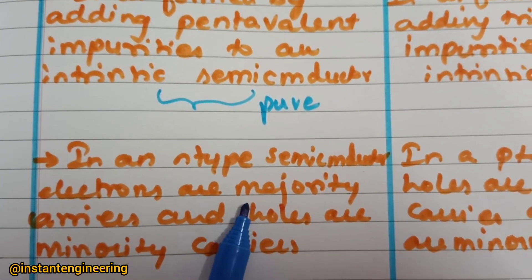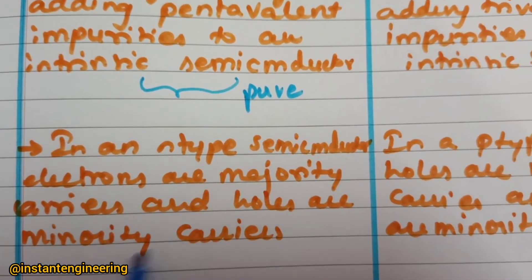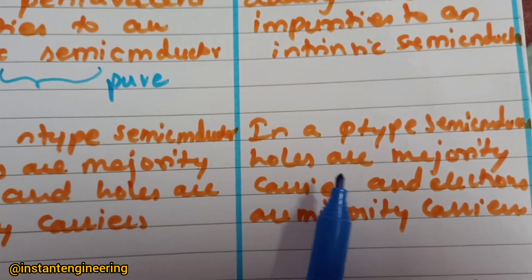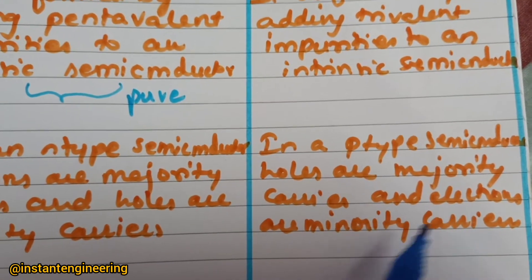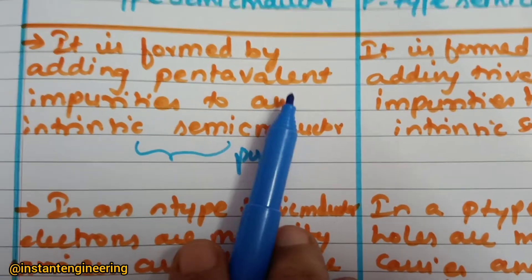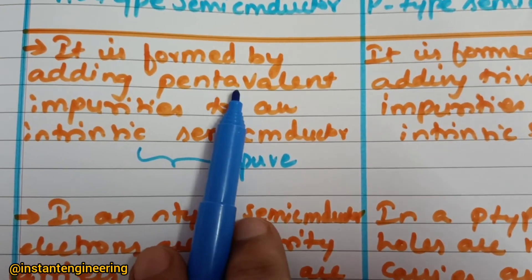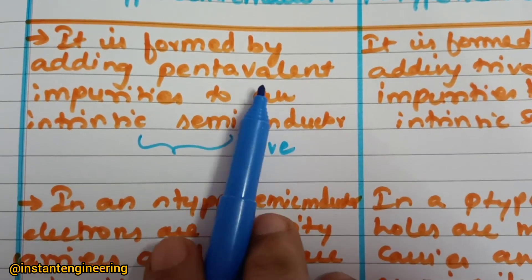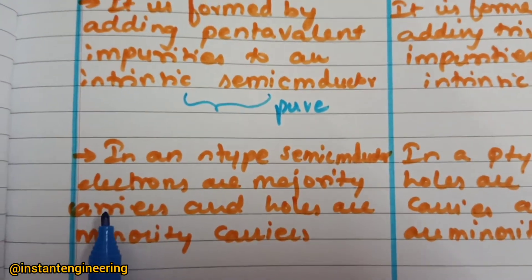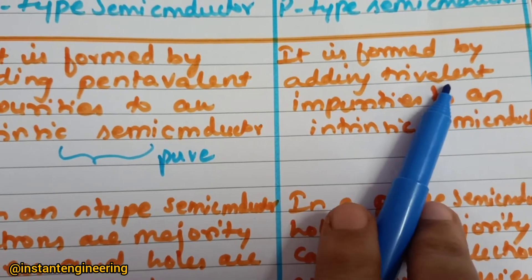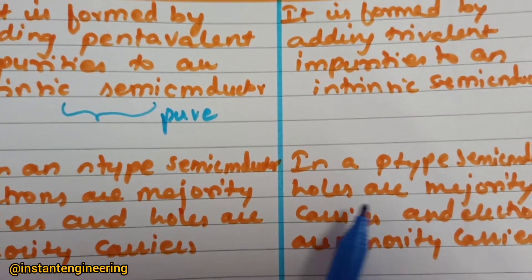The next difference: in an n-type semiconductor, electrons are the majority carriers and holes are the minority carriers. In a p-type semiconductor, holes are the majority carriers and electrons are the minority carriers. This makes sense because pentavalent means there are 5 electrons, so the majority are electrons — that's why electrons are the majority carriers in n-type.